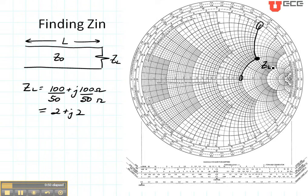And I want to be able to find my input impedance Zin when my length is 0.2 wavelengths. The way I do that is I plot my load as I have here and then I'm going to use my distance axis.